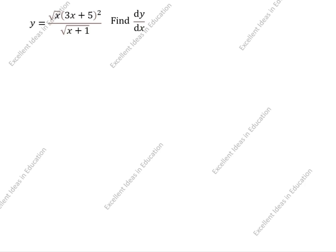Hi friends, welcome to my channel Excellent Ideas in Education. Today we are going to solve this differentiation problem — this is a very important problem asked in JEE. We will see the shortcut trick. y is equal to root x times open bracket (3x + 5) whole squared, divided by root of (x + 1). Find dy/dx.